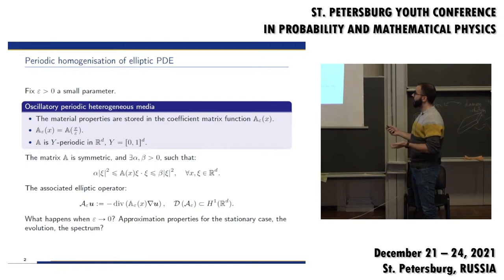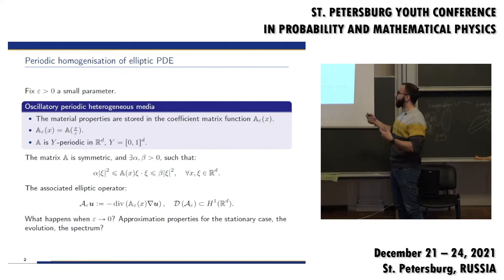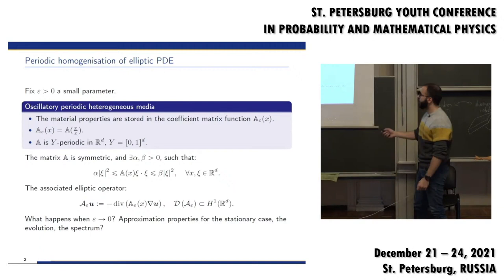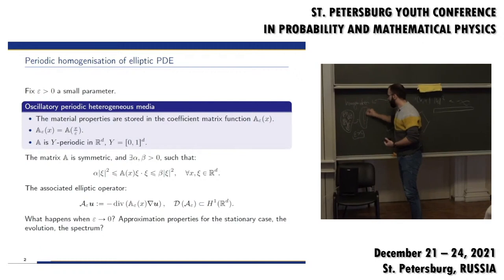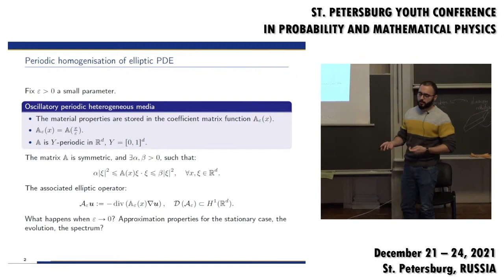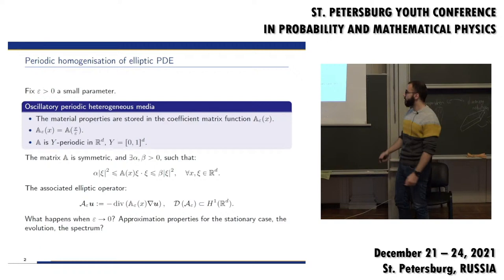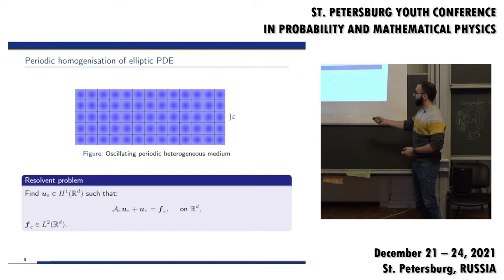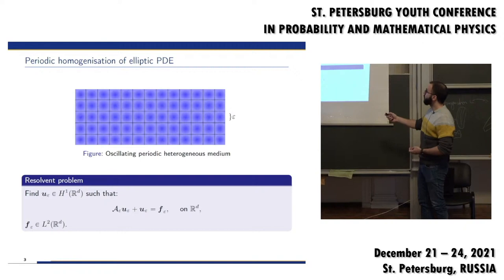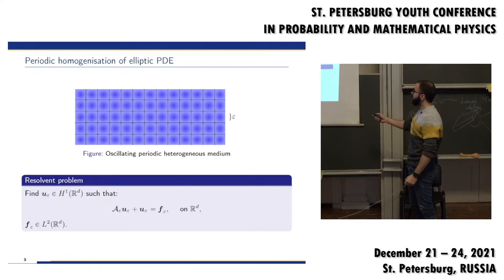This matrix depends on X, so the material is heterogeneous and oscillates with period epsilon. You wonder what happens when epsilon goes to zero — not only what the limit model is, but also what happens with semigroups and with the spectrum of this operator. To study this, you look at the resolvent problem for this operator, which involves a parameter away from the spectrum. In the picture you see the periodically oscillating medium where the cell of size epsilon repeats.